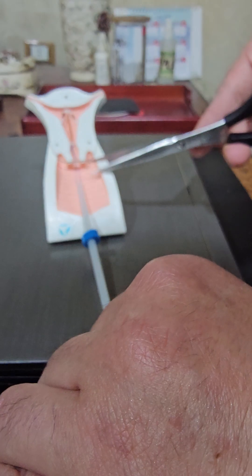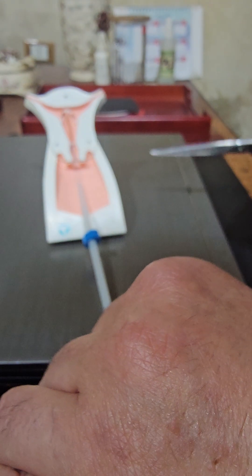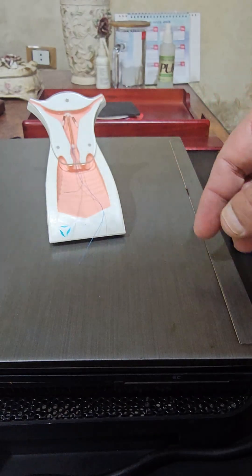One centimeter from the external os, we will cut it like that with scissors. That's all, then remove the inserter.